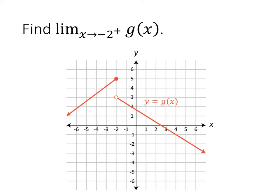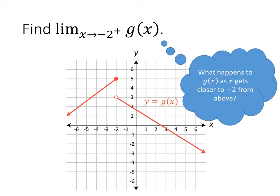Now let's try to understand what limits mean. We're trying to find the limit as x goes to negative 2 from above of g. The 'lim' stands for limit, and x arrow negative 2 plus means that x is getting closer to negative 2 from above negative 2. So the question being asked is: what happens to g as x gets closer to negative 2 from above? We're thinking about x-values close to negative 2 but larger than it — approaching negative 2 from the right.